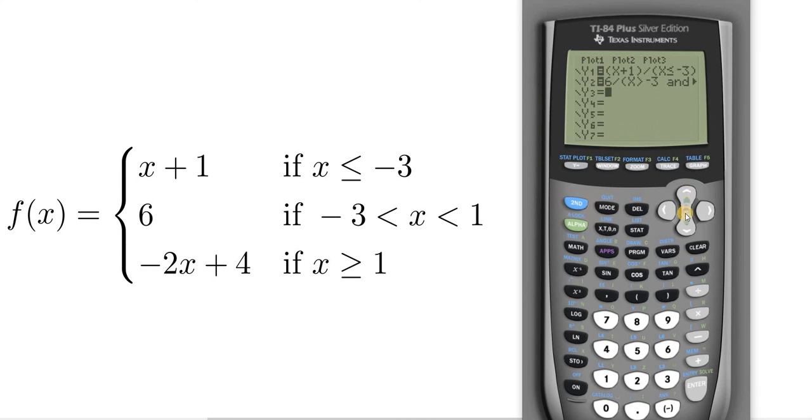So now we have to go to the last one. So negative 2x plus 4. So parentheses. Negative 2x plus 4. Parentheses. Division sign. Parentheses. X. Then go back to the test menu. Second. Test. Go down to greater than or equal to. And then 1. And then hit enter.